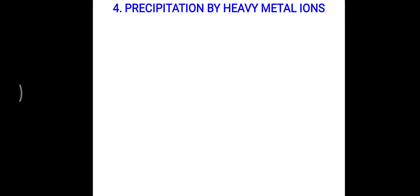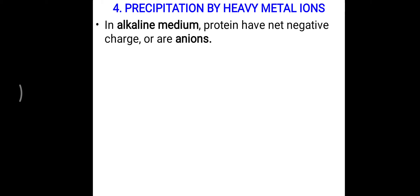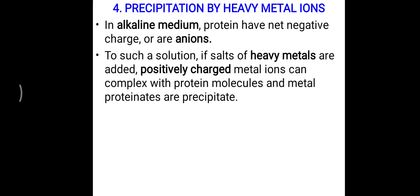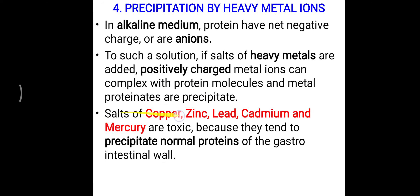Another important precipitation reaction uses heavy metal ions. In alkaline medium, proteins carry a net negative charge, acting as anions. When salts of heavy metals — which mostly carry positive charge — are added, these positively charged metal ions form complexes with the negatively charged protein molecules, and metal proteinates are precipitated.